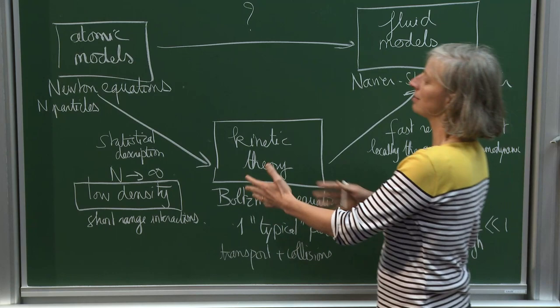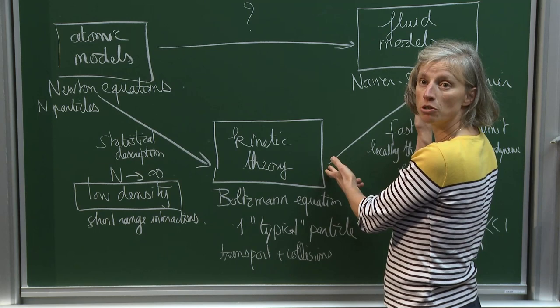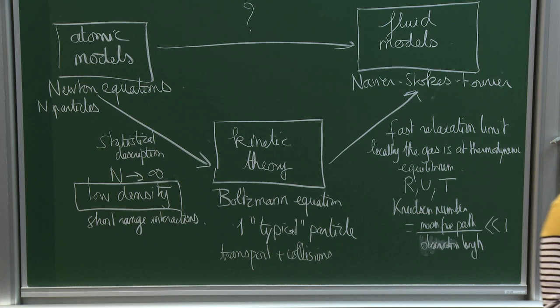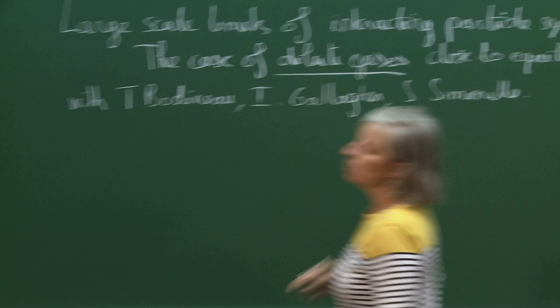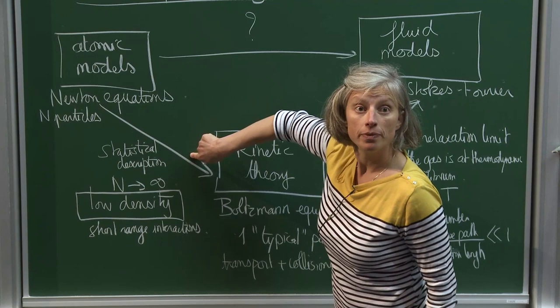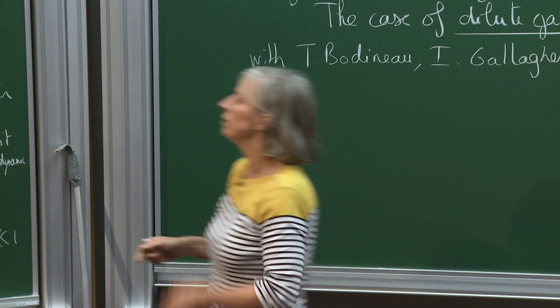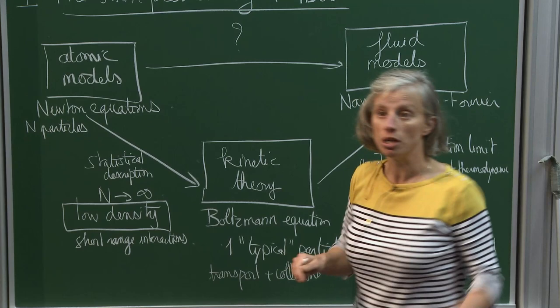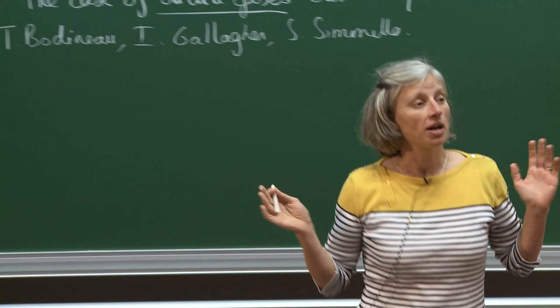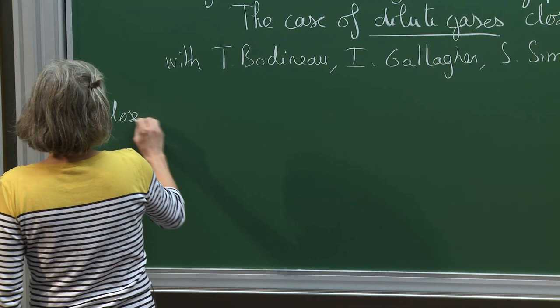The problem is that this Boltzmann-to-fluid transition in general is justified only for a few collisions — a fraction of the typical mean free time. So if you have this result only for short time, it's impossible to combine with results on hydrodynamic limits. That's why I describe the situation close to equilibrium: close to equilibrium, we are able to justify this transition for long times.